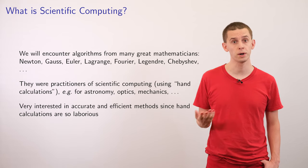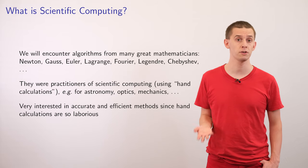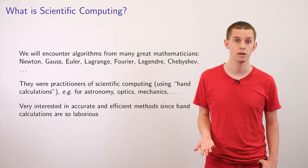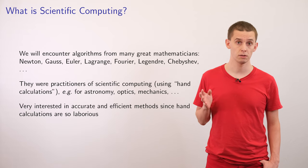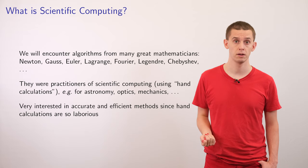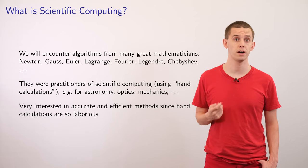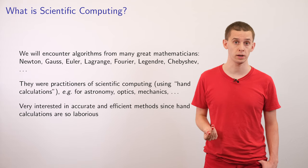And they were all practitioners of scientific computing, mainly because in the fields they were interested in, areas like astronomy and mechanics, there was a real need to actually do real calculations that had to be performed by hand. And because these calculations were so laborious, there was a real interest in finding more accurate and efficient ways to do them.